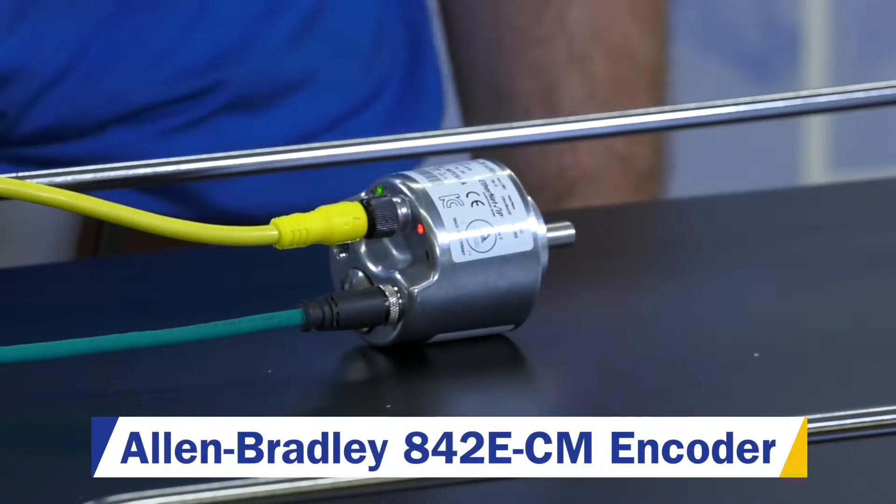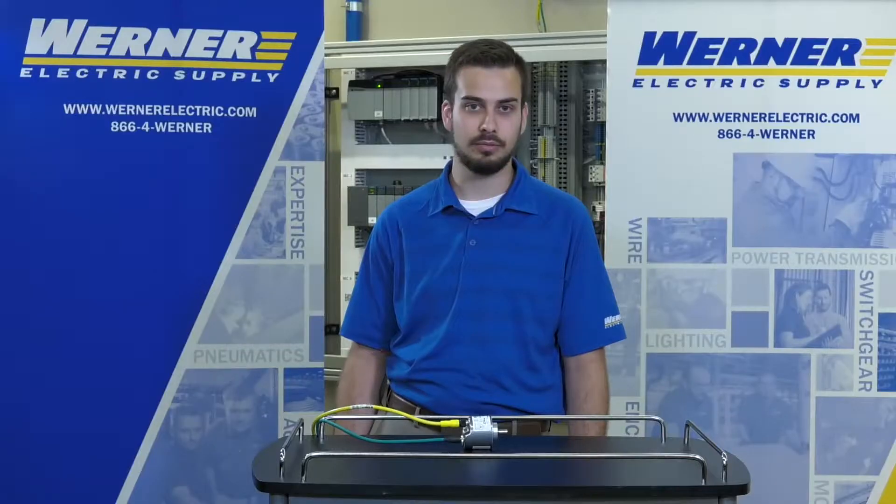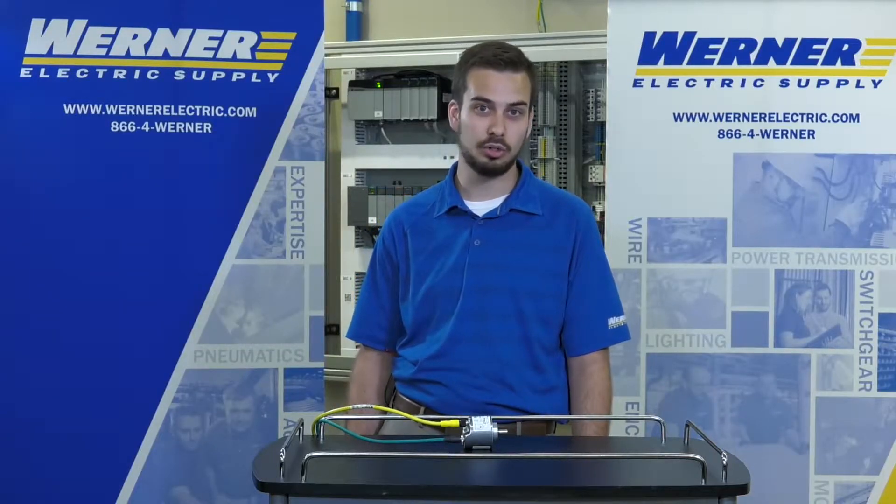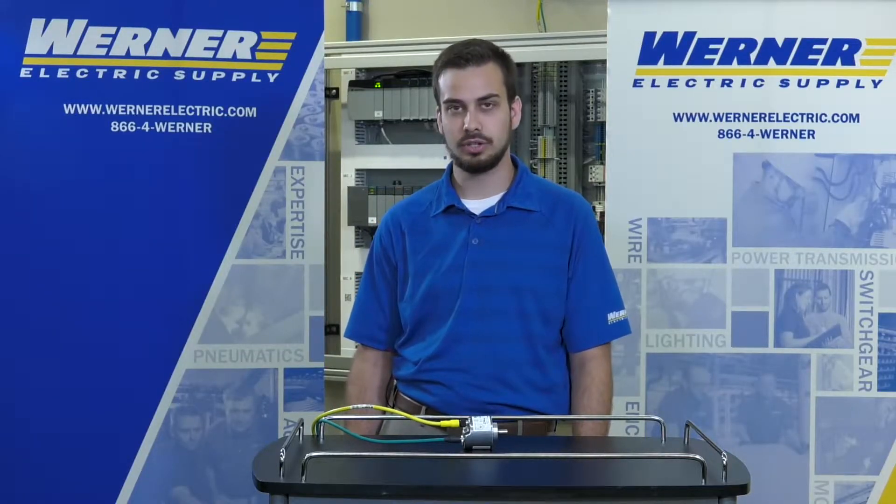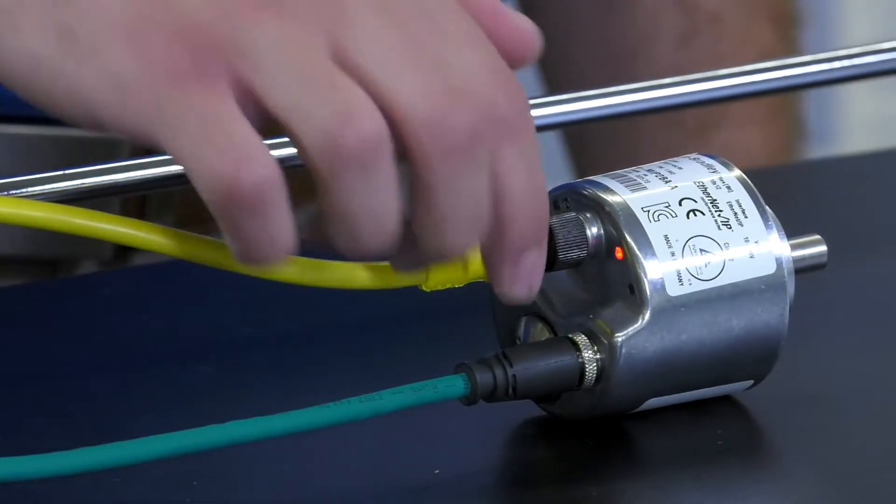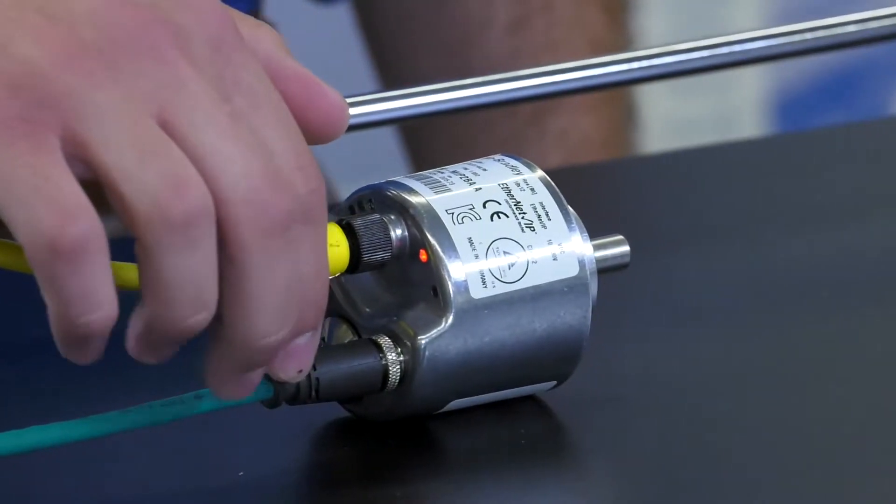The 842e comes in a variety of options, but what we're going to be talking about today is the SIP Motion version. So the SIP Motion version basically has a 24 volt connection and an ethernet connection.